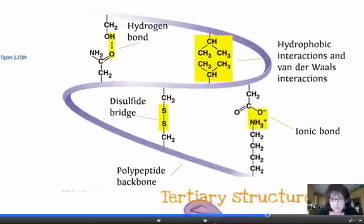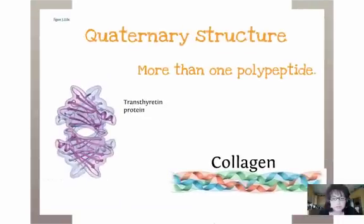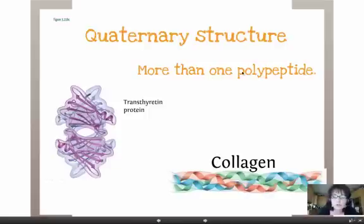Last one is quaternary structure. Again, not all proteins have this. It's more than one polypeptide being brought together to do a job. This is called the transthyretin protein - this has two subunits being attracted to each other, two globs kind of holding together to make a final structure. Collagen is three strands of alpha helices wrapped around each other to make that nice spongy stuff in your nose.